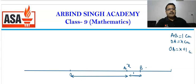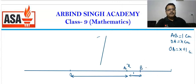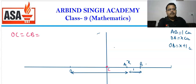We draw a perpendicular bisector and cut it. Then we are in perpendicular bisector form and we can see both middle points. This middle point is C. So OC equals CB equals half of OB. That is OC = CB = (x+1)/2, since OB = x+1.